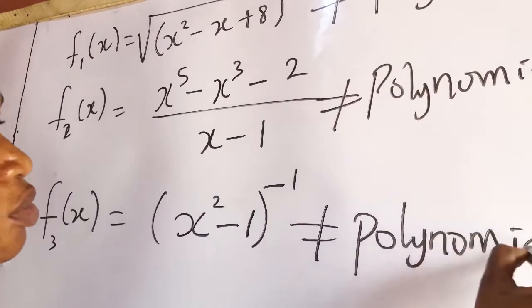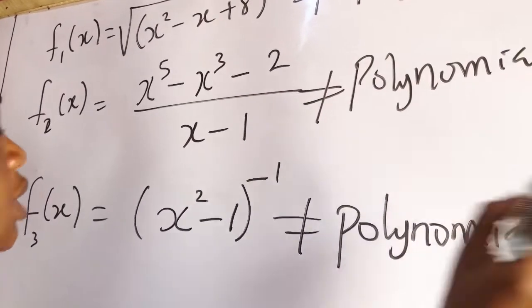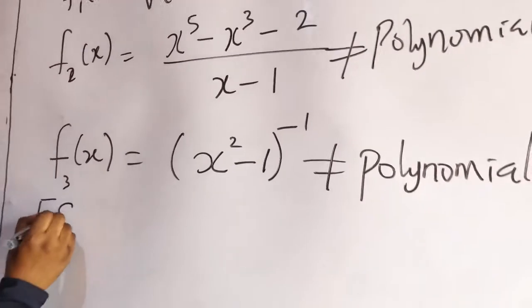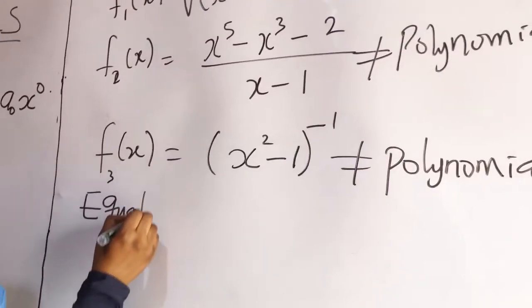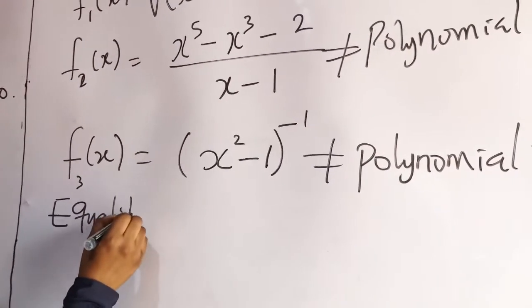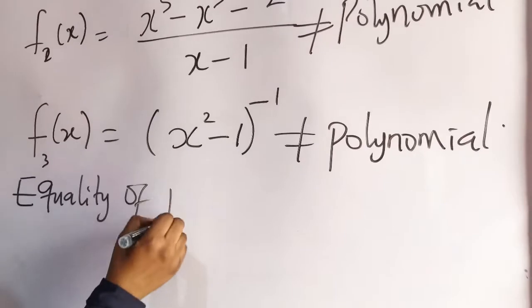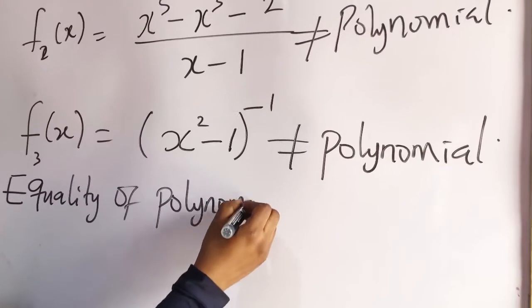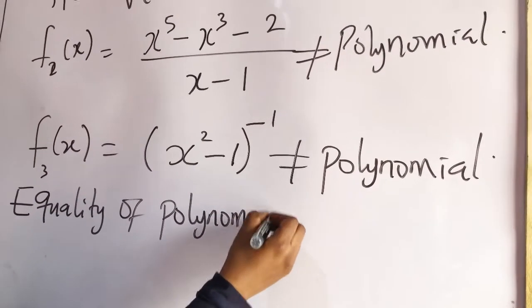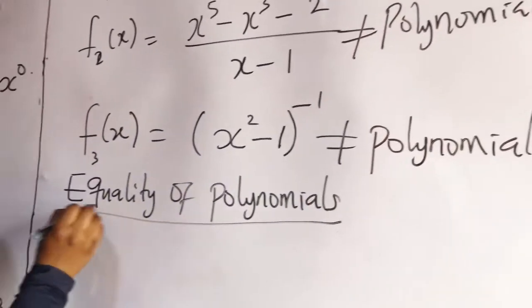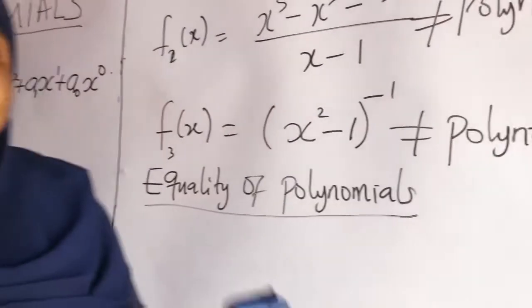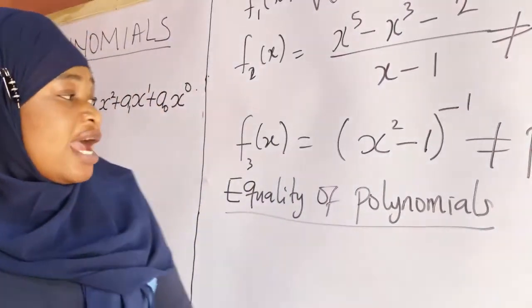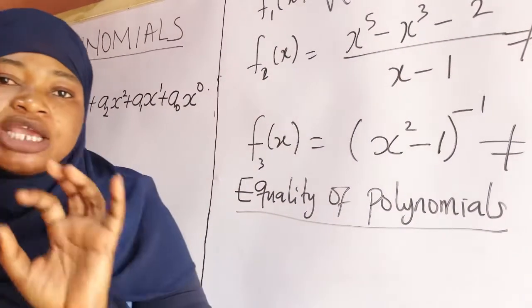So you have to take notes. Now, equality of polynomials: two polynomials are said to be equal if their coefficients are equal.